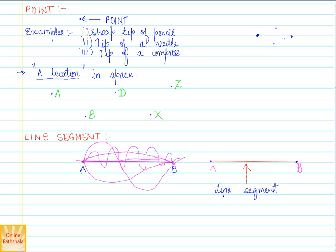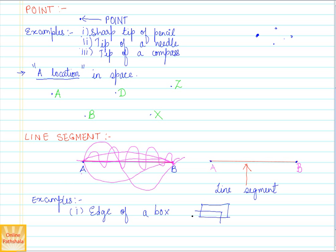A line segment has two endpoints — in this case, A and B. What are some examples of a line segment? One example is the edge of a box. If you have a box and take any one edge, you can put point A at one end and point B at the other end — that forms a line segment.